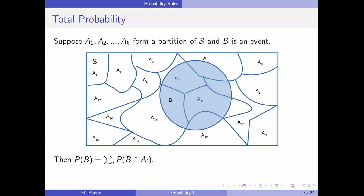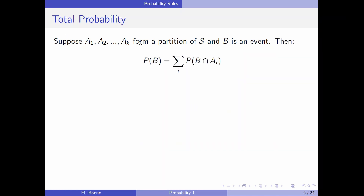Suppose we have a1 through ak form a partition of S, and B is an event — this shaded blue area here is an event. I can find the probability of B just by looking at where B intersects each set, and then just add them all together. It's a pretty easy idea: just add up each of the probabilities of each of the intersections.